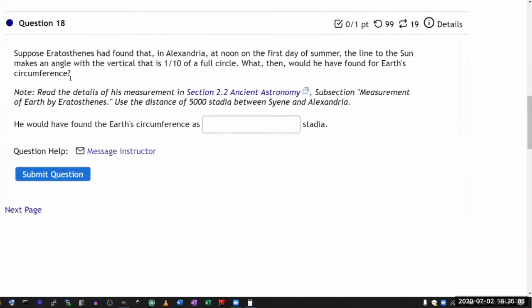So this is referring to the reading section 2.2 ancient astronomy, and it's getting you to do the actual calculation. It's giving you alternate numbers.